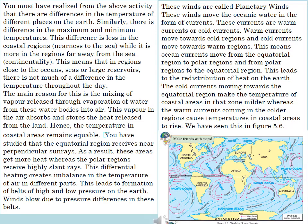This difference is less in the coastal regions — nearness to the sea — while it is more in the regions far away from the sea — continentality. This means that in regions close to the oceans, seas or large reservoirs, there is not much difference in the temperature throughout the day. The main reason for this is the mixing of vapor released through evaporation of water from these water bodies into the air. This vapor in the air absorbs and stores the heat released from the land.